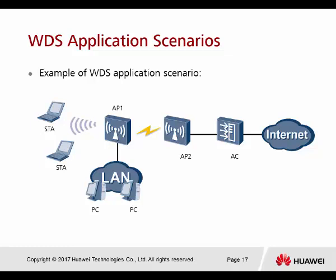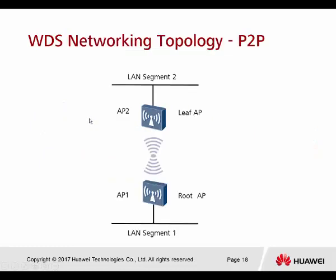The next one is a WDS application scenario. Right here you have one AC — the access controller — AP two, and also AP number one. When we want to form a LAN connection without using a LAN cable, we can use wireless bridging. Of course, both APs need to support this feature. This is called the point-to-point connection. As you can see, AP two and AP one are only using wireless to connect.